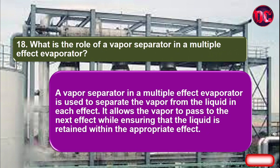What is the role of a vapor separator in a multiple effect evaporator? A vapor separator is used to separate the vapor from the liquid in each effect. It allows the vapor to pass to the next effect while ensuring that the liquid is retained within the appropriate effect.